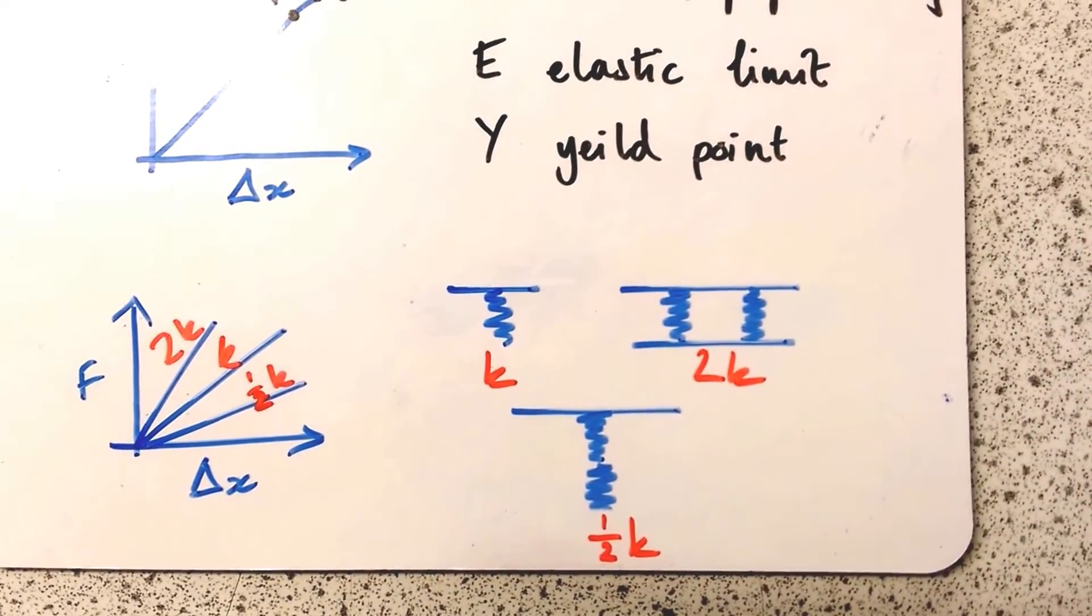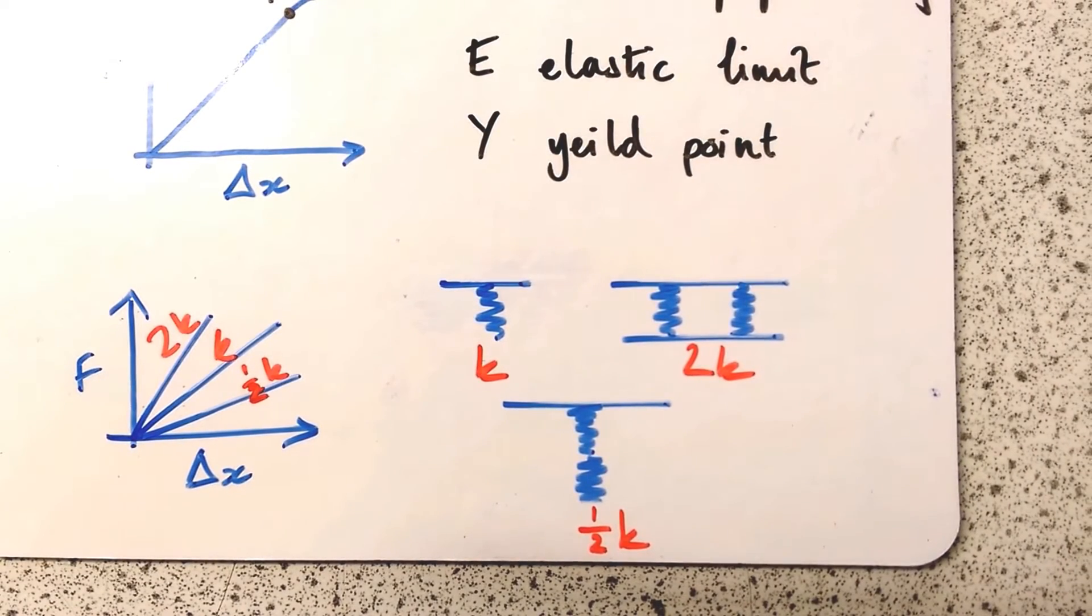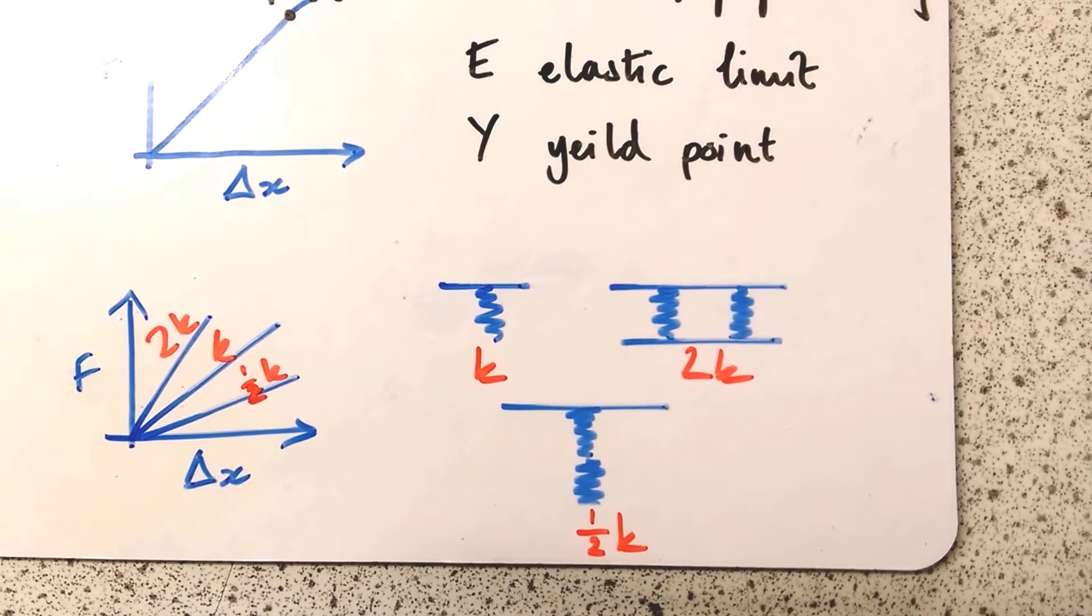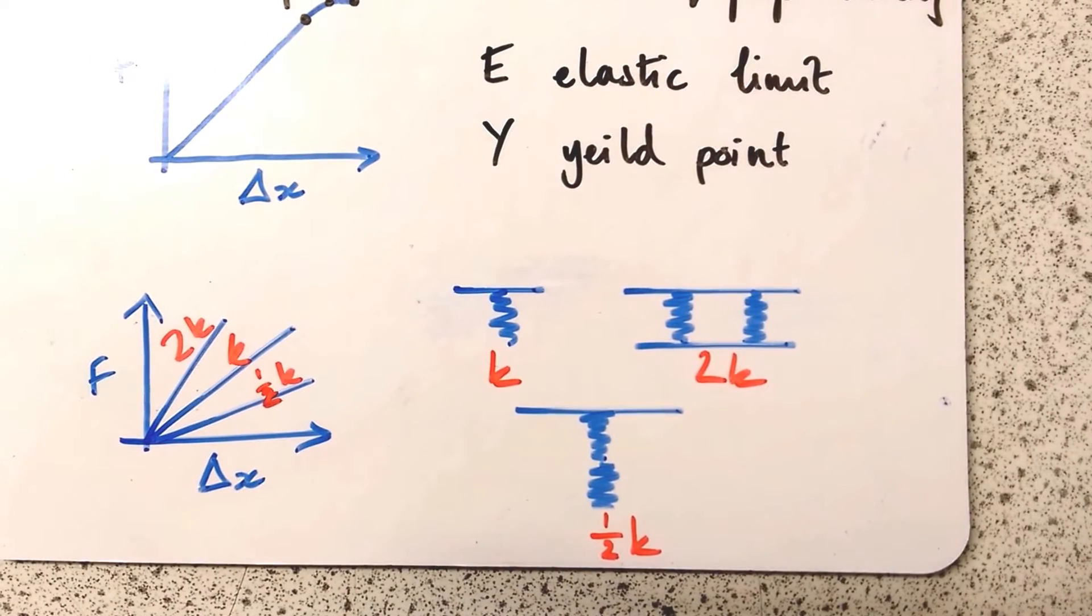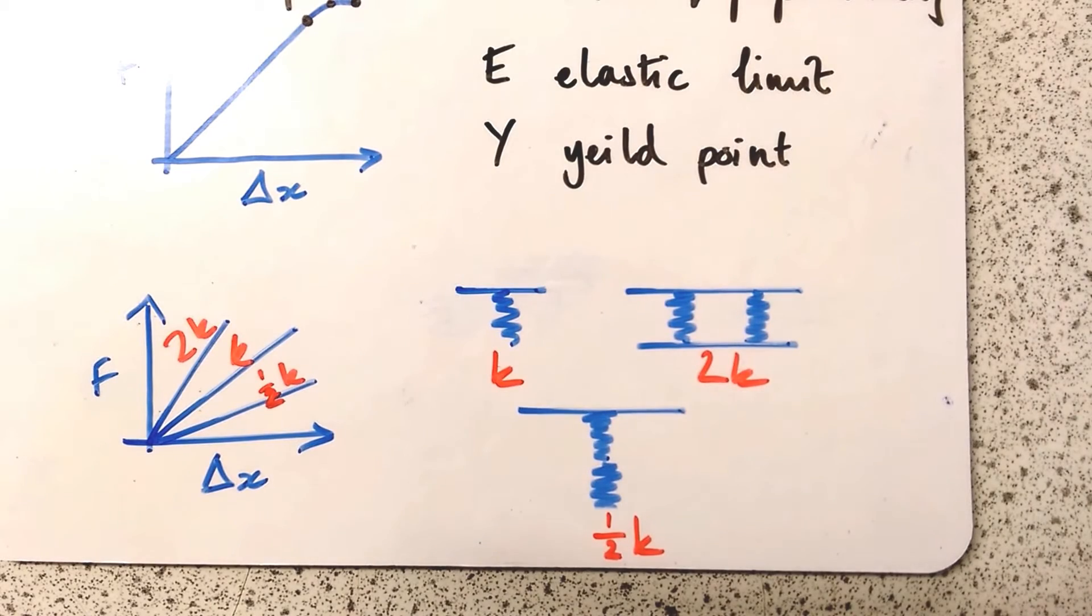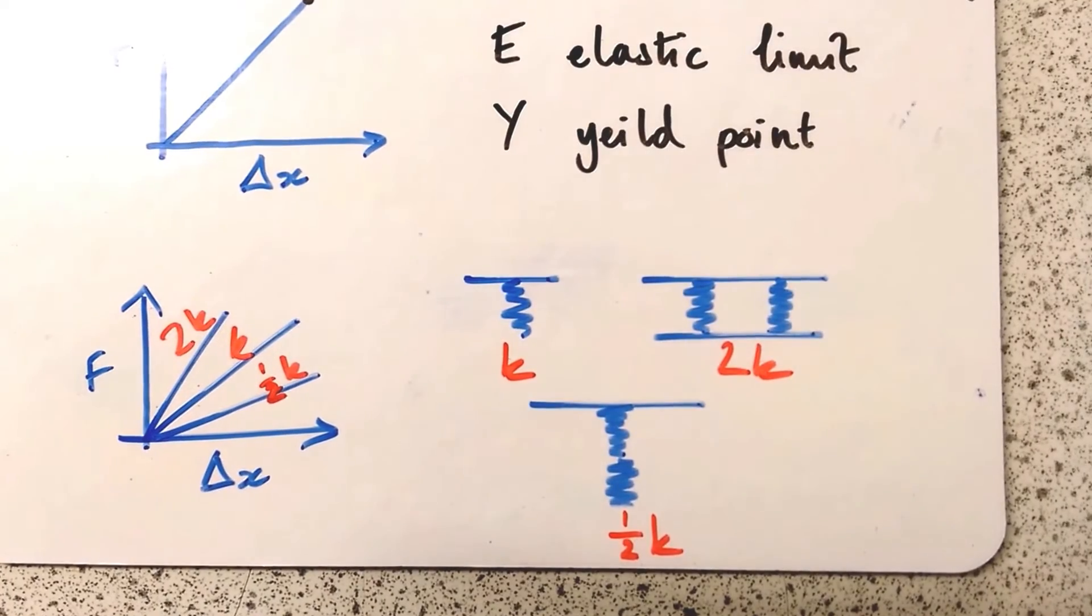Now, on the right here is how to achieve those spring constants if we have the same springs. The spring on its own has spring constant k. The springs set up in parallel have a spring constant of 2k. And the springs set up in series, end to end, have a spring constant of k/2 - half as stiff as just one spring on its own.